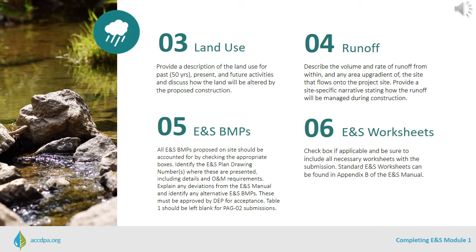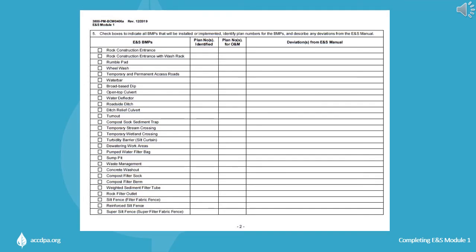Item 5 takes up two pages of the module and has a list of almost all of the standard ENS BMPs found in our BMP manual. All ENS BMPs proposed on site should be accounted for by checking the appropriate boxes. Identify the ENS plan drawing numbers where each BMP is shown on both the site drawing and the details page, and include the sheet number where O&M requirements have been listed. Explain any deviations from the ENS manual and identify alternative ENS BMPs. Any alternative ENS BMP proposed must be accompanied with documentation stating it was approved by DEP prior to submission.